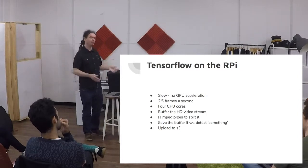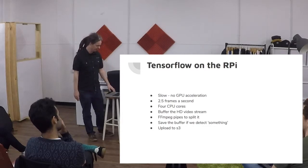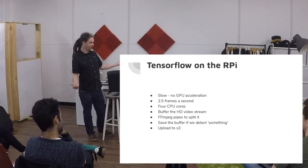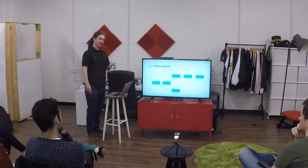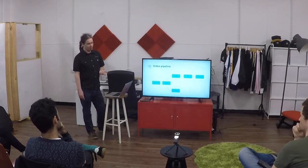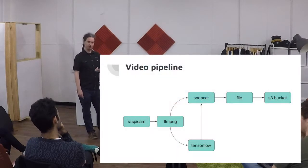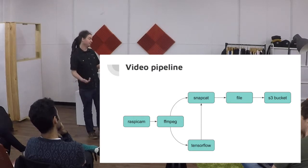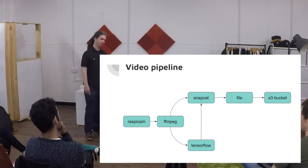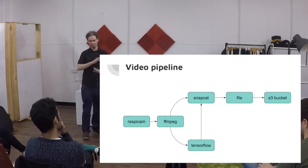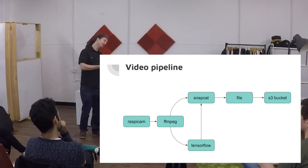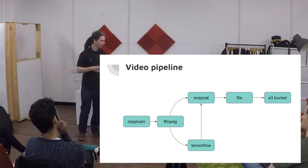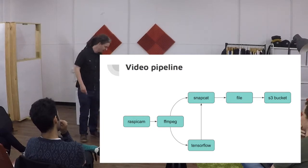The general process is to buffer the video, use ffmpeg to split it up, and if the TensorFlow code detects something, save it and upload it to S3. Snapcat is a tiny bit of Python code — essentially a signal-triggered version of cat: a USR1 signal starts writing, USR2 stops writing. Crond — a cron daemon that is actually a filesystem-watching daemon — detects when the file has finished writing and uploads it to S3.